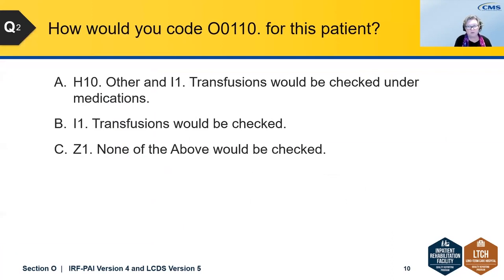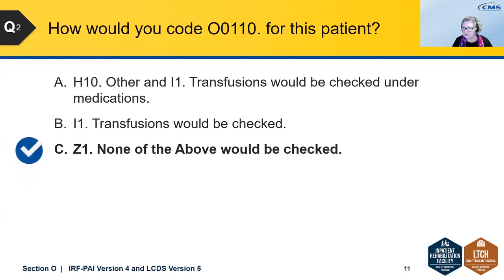How would you code O0110 for this patient? Is it A: H10 other, and I1 transfusions? Is it B: just I1 transfusions? Or is it Z: none of the above? I'll give you a few seconds to answer that.